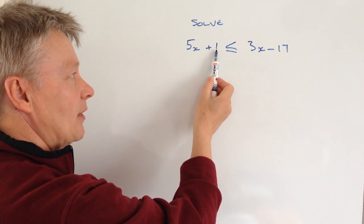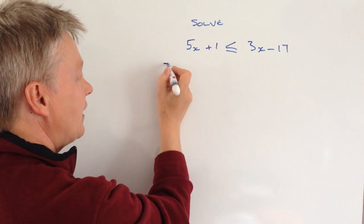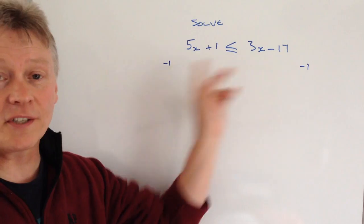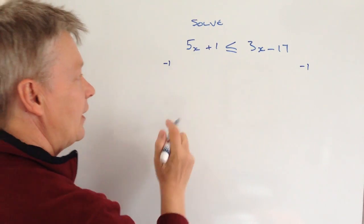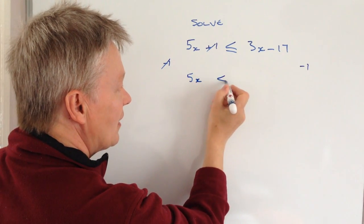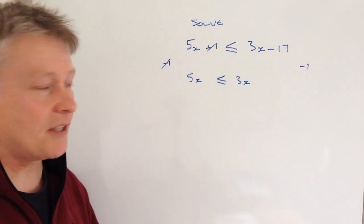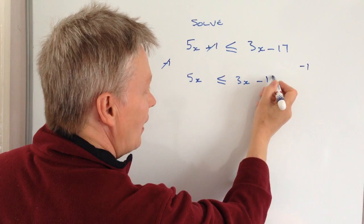The first thing I want to look at is this plus 1. I'm going to get it over towards that right hand side by taking it away. But in the interest of balance I have to make sure I take away from both sides. So I get rid of this and end up with just 5x and that's less than or equal to 3x minus 17 minus 1, which is minus 18.